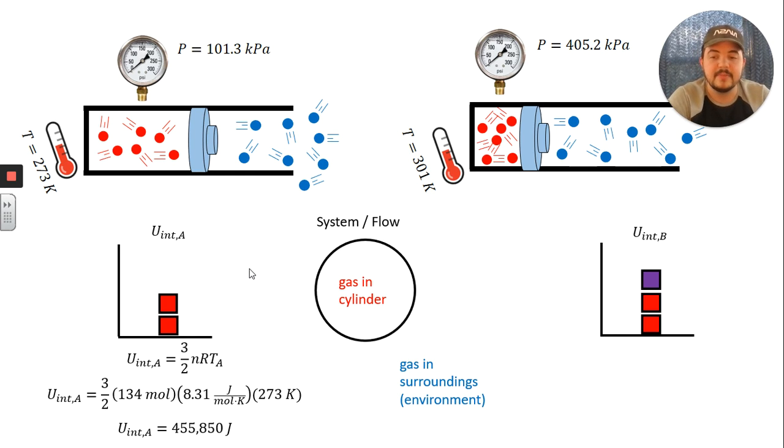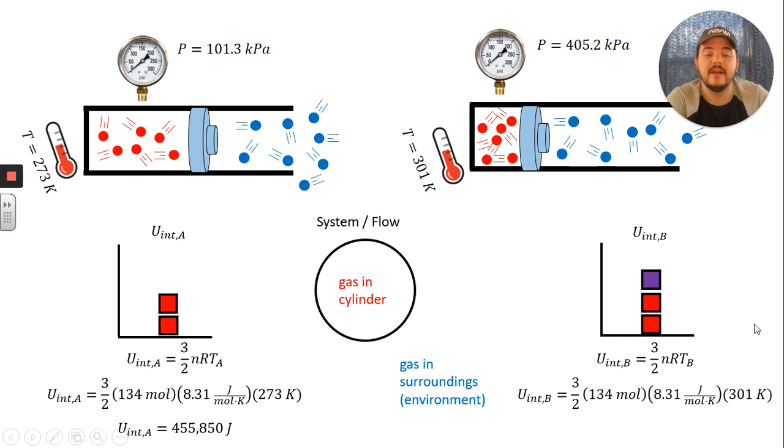Do the same thing for b: three-halves nRT, the difference being the temperature b is higher. Plug in our values and we end up with about 503,000 joules of internal energy at b. So this quantitatively agrees with what we just thought through, that this number should be a higher value than the number on the left. The internal energy has increased.